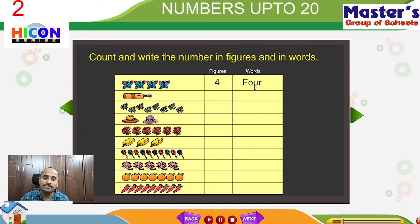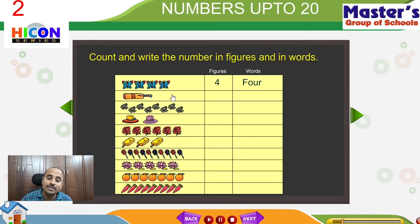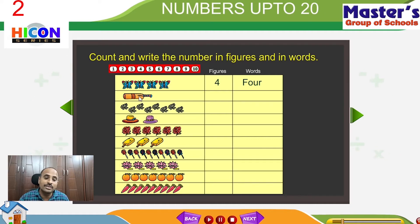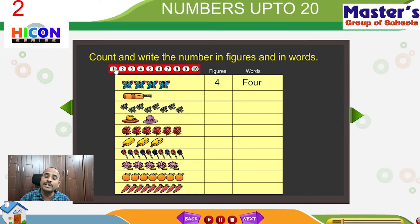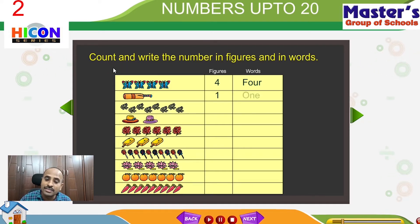So children, see the second object. What is this object? Yes, it's a cricket bat. How many cricket bats are there? There is one cricket bat. So the number is 1, and it can be written in words: O, N, E — one.